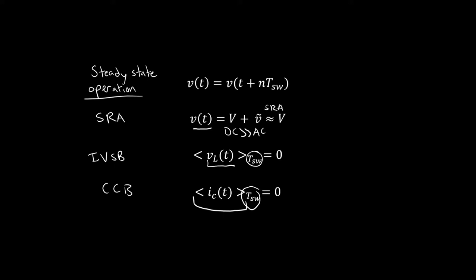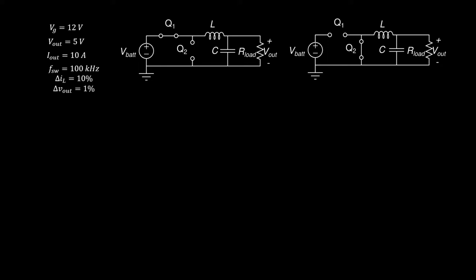Last time we were looking at a buck converter. The buck converter has two switching states: the first between 0 and D·TSW, and the second between D·TSW and TSW. In the first state, Q1 is on and Q2 is off. In the second state, Q1 is off and Q2 is on.